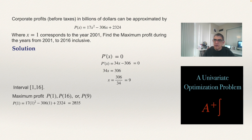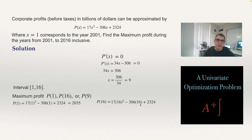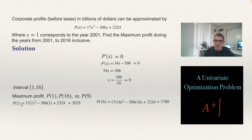Next, we compute P(16) — the profit in 2016. Substituting x = 16: 17(16²) - 306(16) + 2324. Using a calculator, the result is 1780. So P(16) = 1780 billion dollars. The profit in 2001 was higher than in 2016.